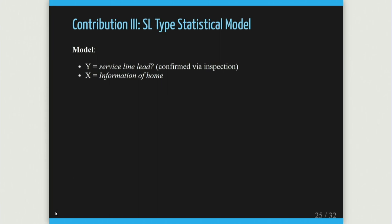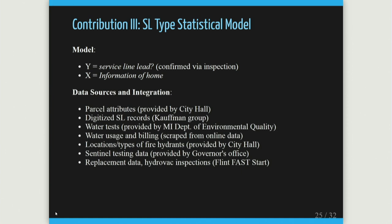The third thing we provided was statistical model support — a predictive model on which homes have which material types. That involved a huge amount of effort getting data from various sources: parcel data (when homes were built, size, distance from street, property value); the digitized records; water tests provided by residents published by the state of Michigan; water usage and billing; locations and types of fire hydrants; and replacement data from our data collection app.